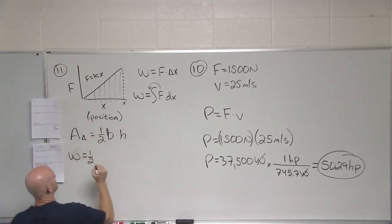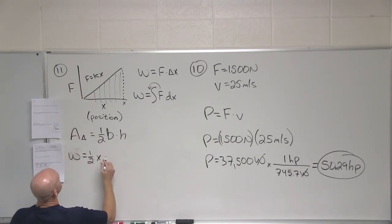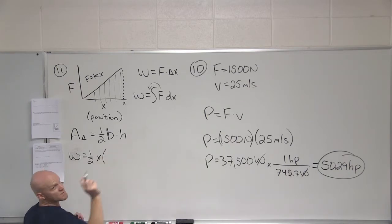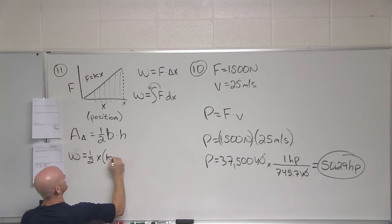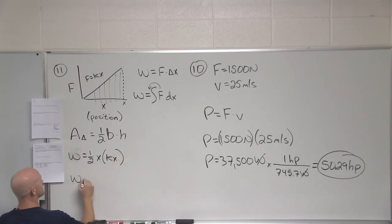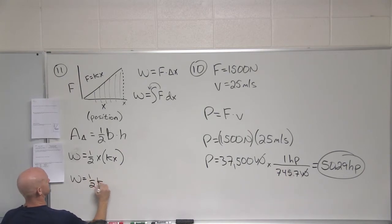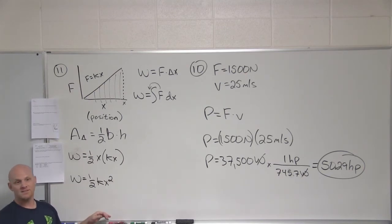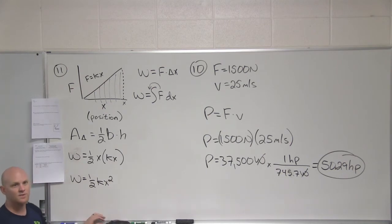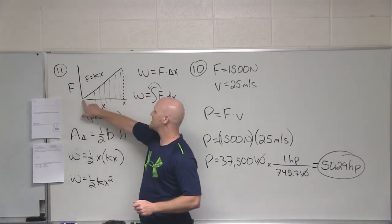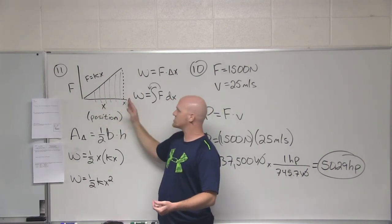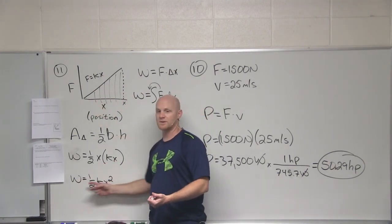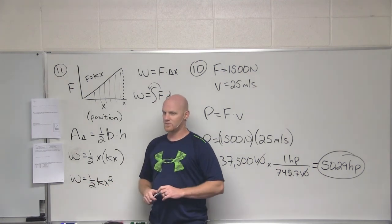What's the area of a triangle? One-half base times height. The base is X, and the height is the force, which equals Kx. So the work to stretch that spring to a displacement of X is one-half Kx squared. That should look familiar — that's the potential energy of a spring. It makes perfect sense: to displace the spring from zero to position X, the work you're doing gives it potential energy, so they should be exactly the same magnitude.